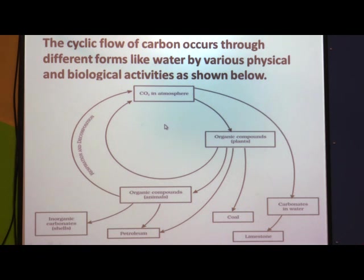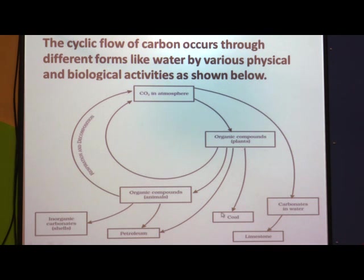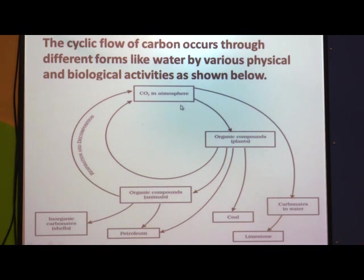Looking at the figure of the carbon cycle: carbon is present as CO2 in the atmosphere, then it goes into water in the form of carbonates, from where limestone is formed. This CO2 from the atmosphere is also utilized by plants during photosynthesis. Burning of coal and petroleum releases carbon. From plants, animals utilize the organic compounds containing carbon. Due to respiration and decomposition, carbon dioxide gas is released back into the atmosphere, so carbon moves in a cyclic manner.